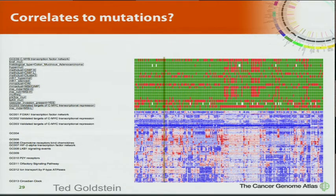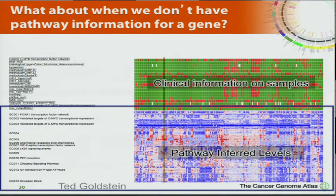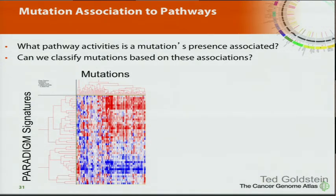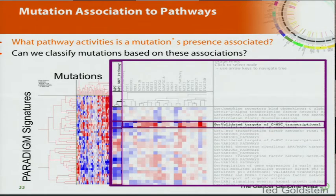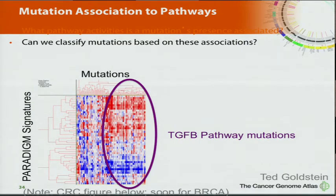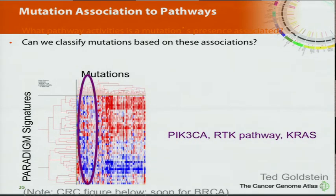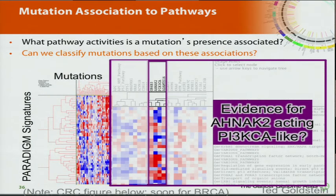If you don't have good pathway models for genes, you can plot mutations against clinical information and infer a connection between mutations and phenotypes. We piloted this in the colorectal study — you can cluster mutations based on pathway activity signatures. APC and P53 tend to have the same correlations; APC mutations are correlated with MYC activity and anti-correlated with repressed targets of MYC. At the other end, TGF-beta pathway mutations cluster together, and in the middle are RTK and PI3 kinase pathway mutations. If a mutation in gene X is associated with the same pathway activities across different patients, perhaps it's acting in the same pathway.